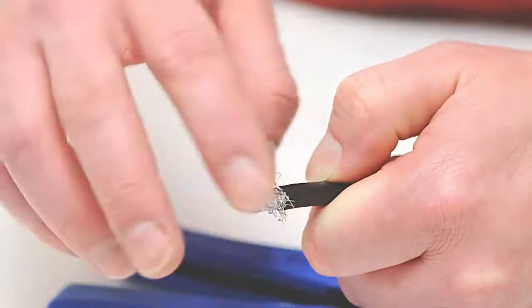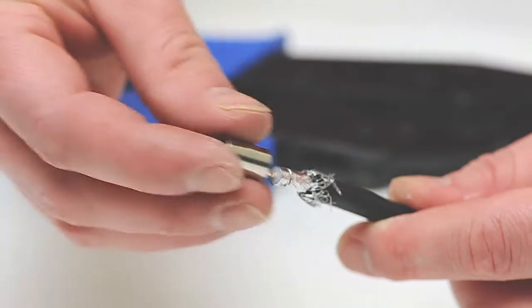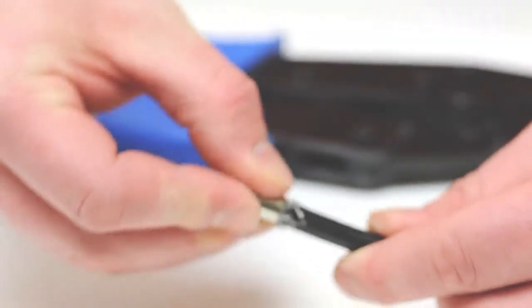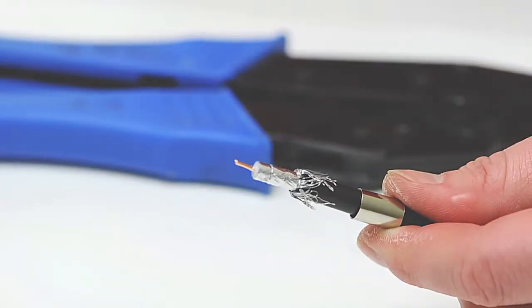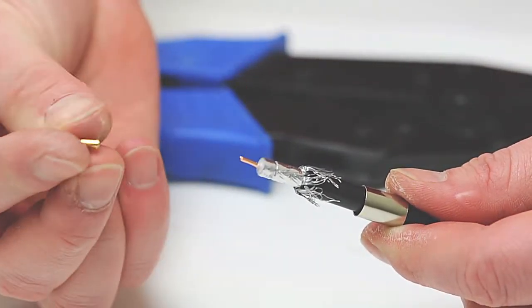Fold the braided shield on top of the jacket, then slide the ferrule over the braid and jacket. Insert the center pin onto the center conductor.